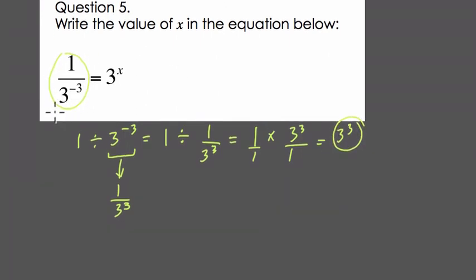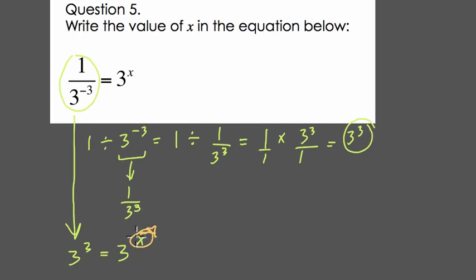So if I rewrite that fraction as 3 to the 3rd, and that equals 3 to the x, we can just see, right, by the location of it physically, that x needs to equal 3. And that's our answer.